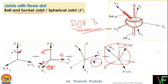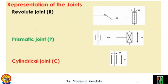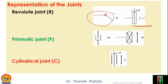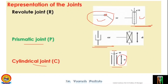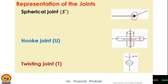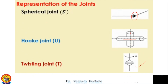This is the representation of joints. A revolute joint is represented by a circle, and there are two common representations for it. This is the representation of the prismatic joint, and this is the cylindrical joint. There is also the spherical joint, the hook joint with two axes, and the twisting joint. These are just representations we will need; they are more bookish symbols. We'll also use symbols actually used in industry when we discuss kinematic diagrams, which are needed to perform kinematic analysis of robots.